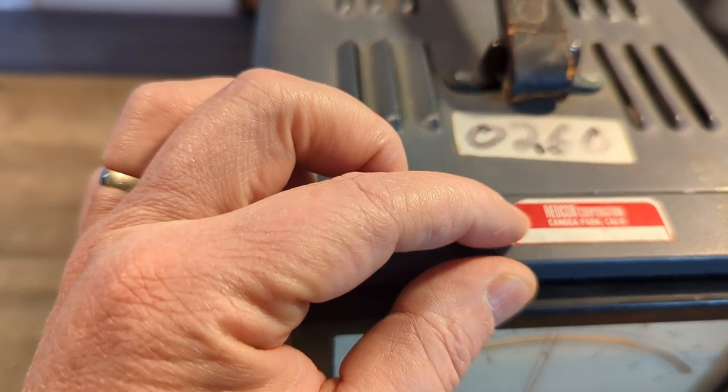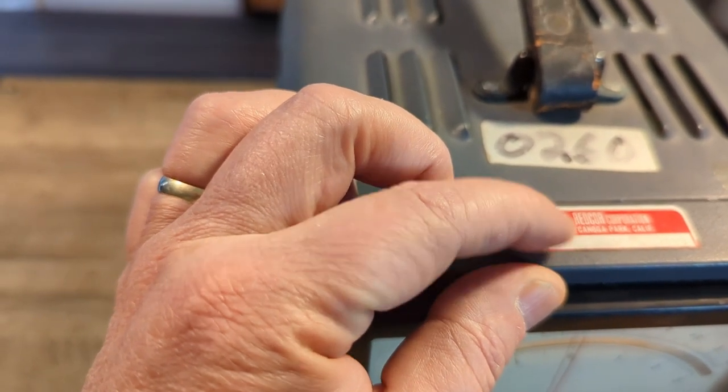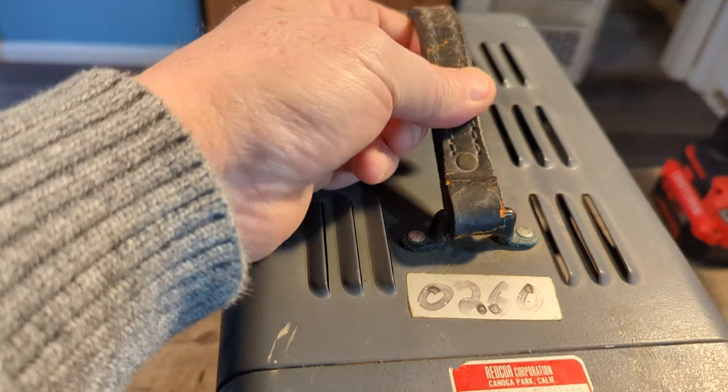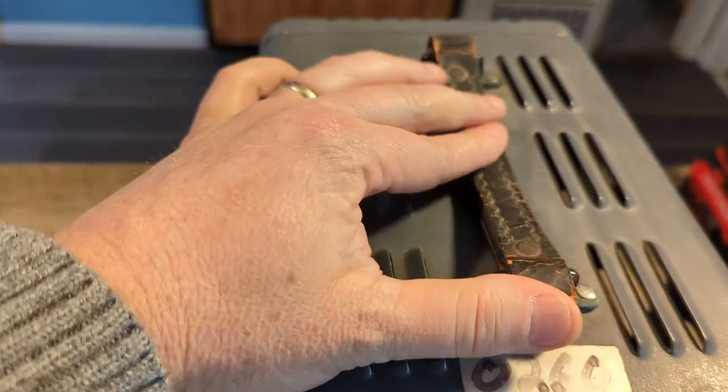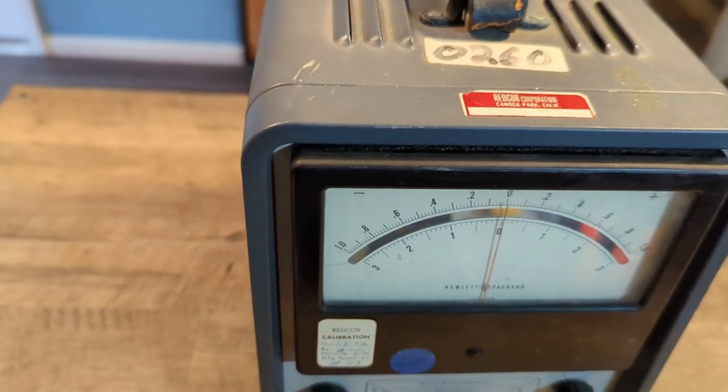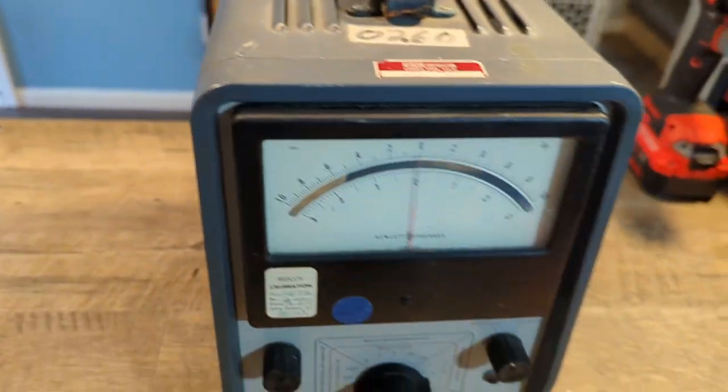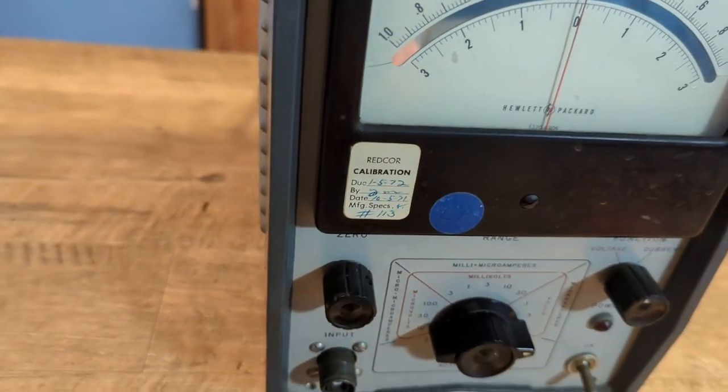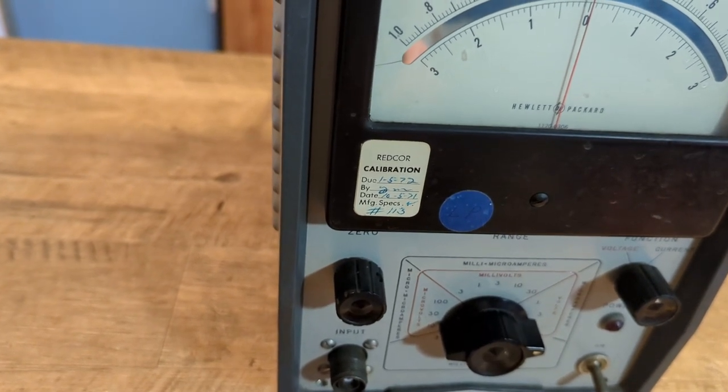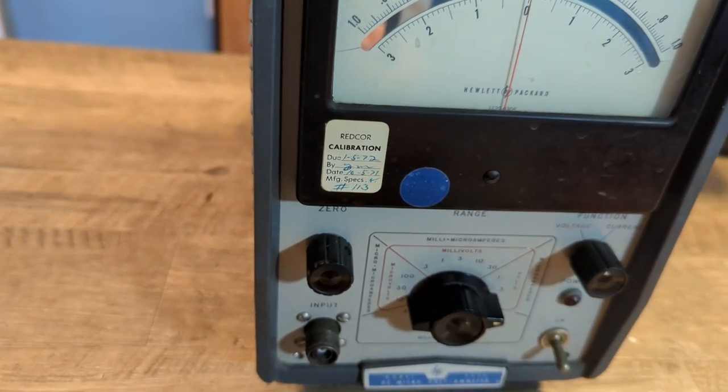Let's get up here where you can see the top. I think this is a serial number sticker from Redcore Corporation, Canoga Park, California. This old leather handle is all cracked but it's still there. This is probably from the late 50s - we'll look inside and see if we can get a date on some of the caps or something. But I think it's like 59, 60 somewhere in there. There's a calibration sticker that was calibrated last in 1971 and it's due again in 1972. I think they missed it though.